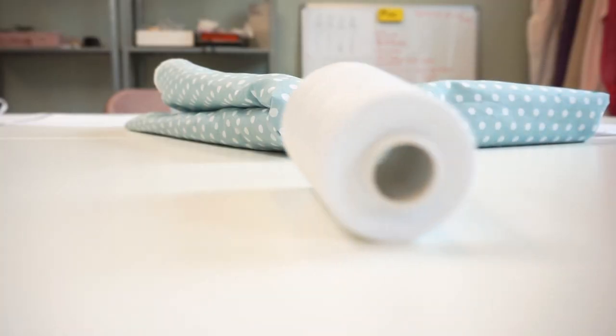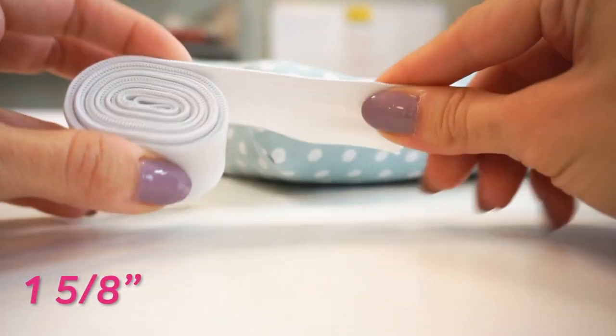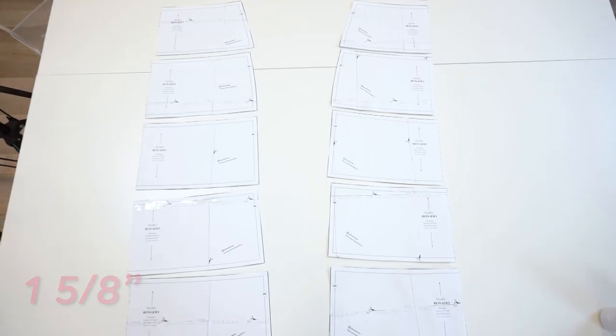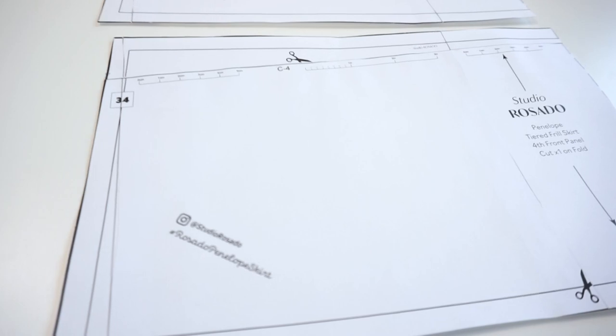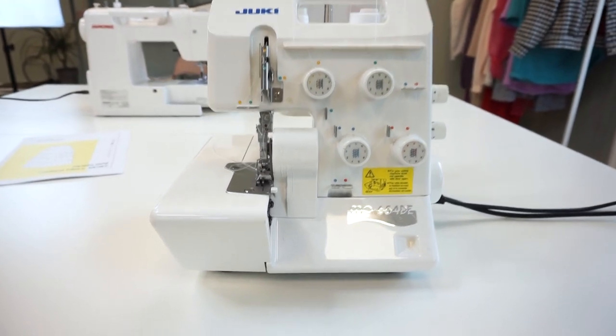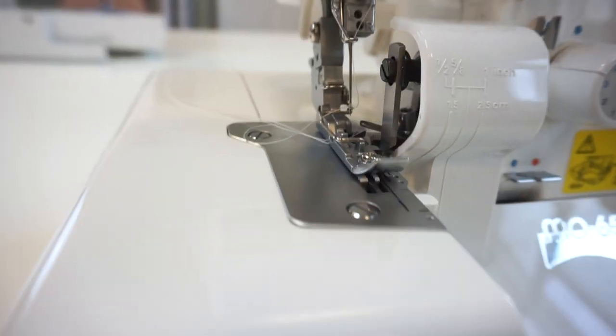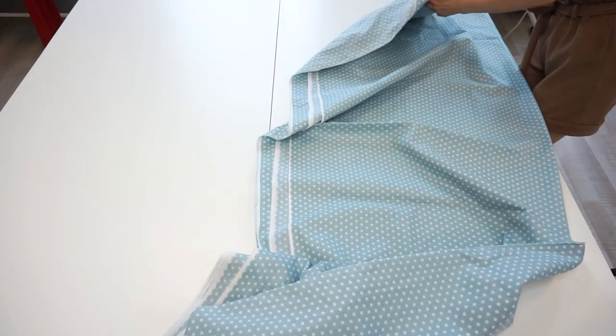You'll need matching thread, an elastic band which is three centimeters wide, and the sewing pattern. You can find the link down in the description. I will use a sewing machine and a serger for neatening the seams, but you can also neaten the seams with a sewing machine zigzag stitch.